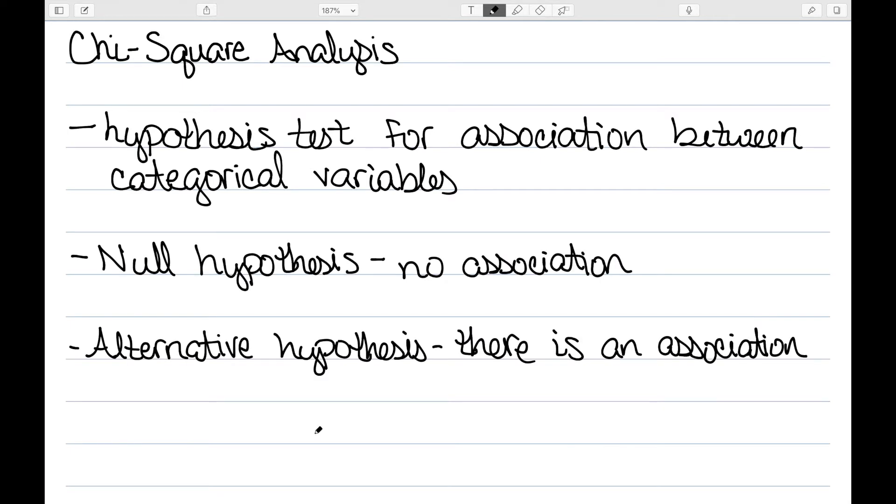For chi-square analysis, our null hypothesis is going to say that there's no association between our two variables, and the alternative hypothesis will say there is an association between the two variables.